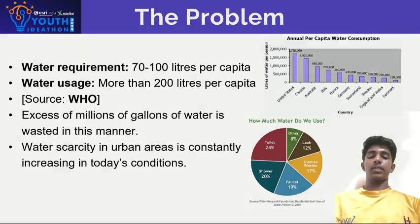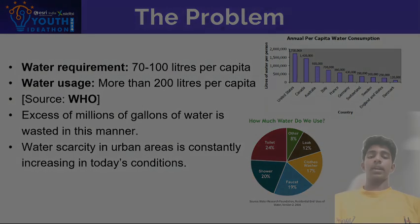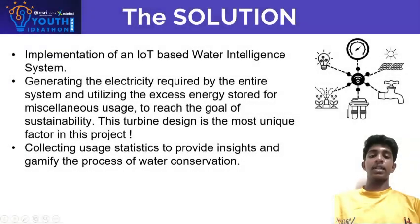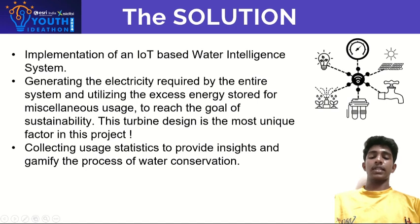For this, we have proposed a solution: implementing an IoT-based water intelligence system where a smart faucet, designed by our team, prevents water usage due to human negligence. The great thing is that the system generates the electricity required by the entire setup, utilizing excess energy stored from miscellaneous usage. To reach this goal of sustainability, we have designed a turbine as a unique feature of this project.